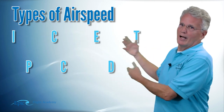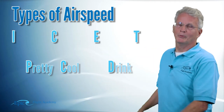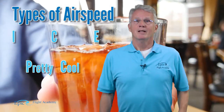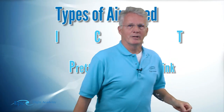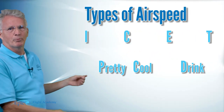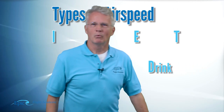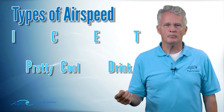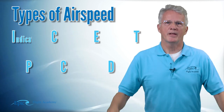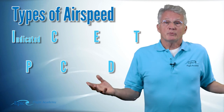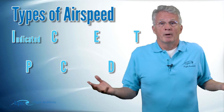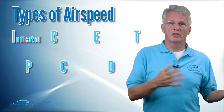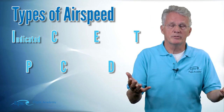The memory aid is 'iced tea is a pretty cool drink.' Let's walk through this acronym to help you remember these different airspeeds. The first letter is I — that stands for indicated airspeed. That's where we start. That's what the indicator gives me — it indicates airspeed. That's the beginning.